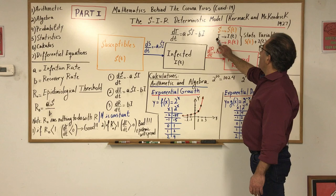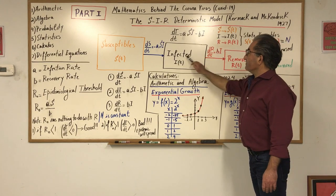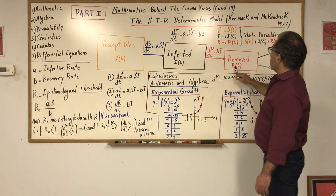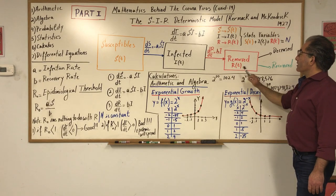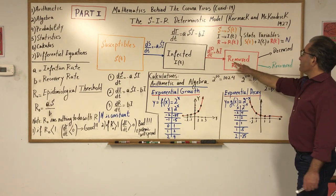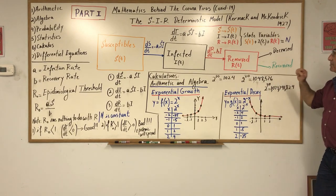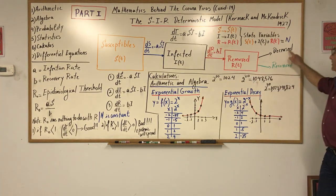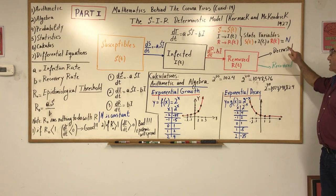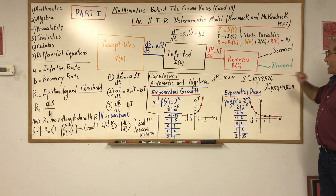The other one is I, which are the infected ones. And we have R, and R are the removed ones. What happens when a person is removed? Either the person dies - we don't want that to happen - or recovers, that's the best.